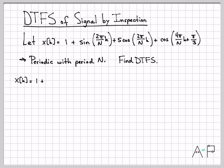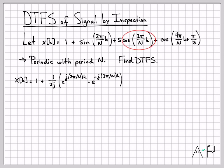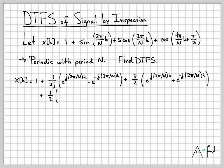So x of k is 1 plus — nothing to do with the 1, it stays constant. For the sine term, recall that sine of x equals (e^(jx) − e^(−jx)) / 2j, so we decompose sine of 2πk/N accordingly. For the cosine, we use cosine of x = (e^(jx) + e^(−jx)) / 2, giving 5/2 times (e^(j2πk/N) + e^(−j2πk/N)). For the last cosine, we get 1/2 times (e^(j(4πk/N + π/3)) + e^(−j(4πk/N + π/3))).